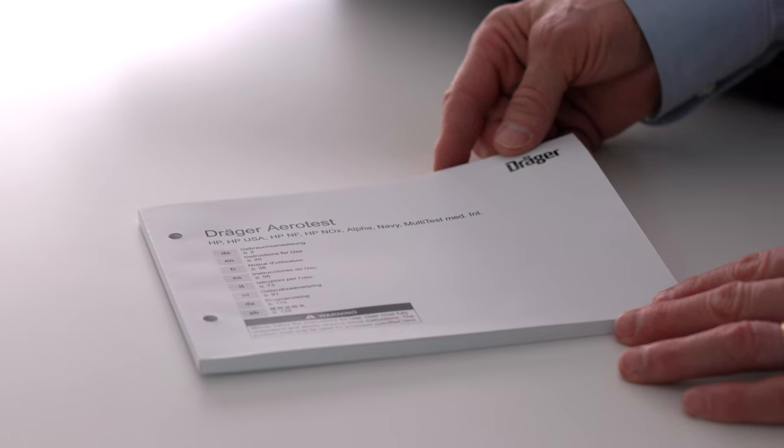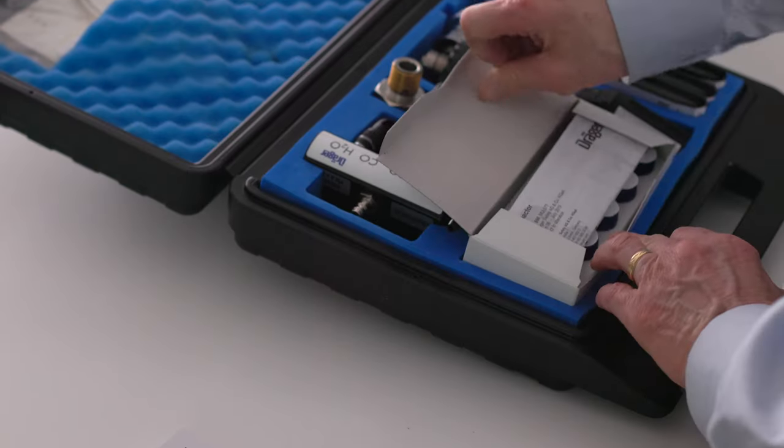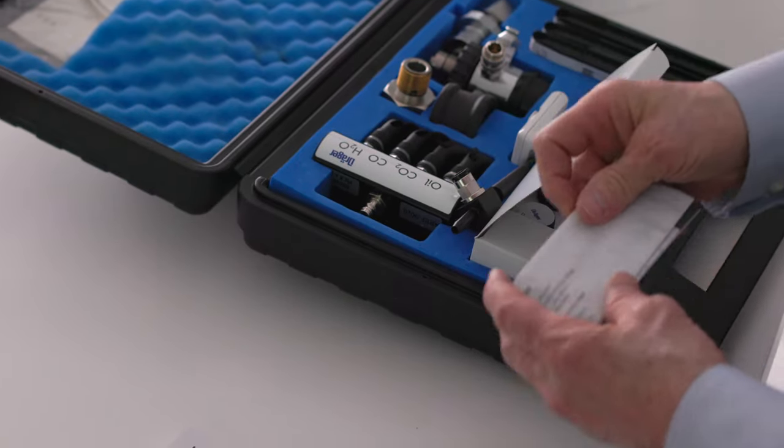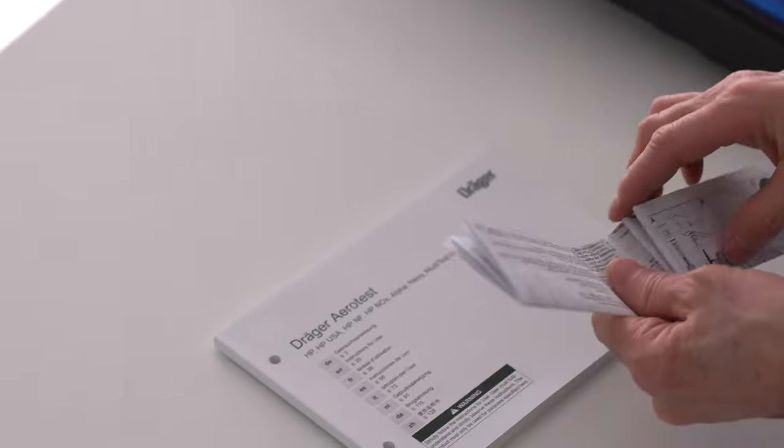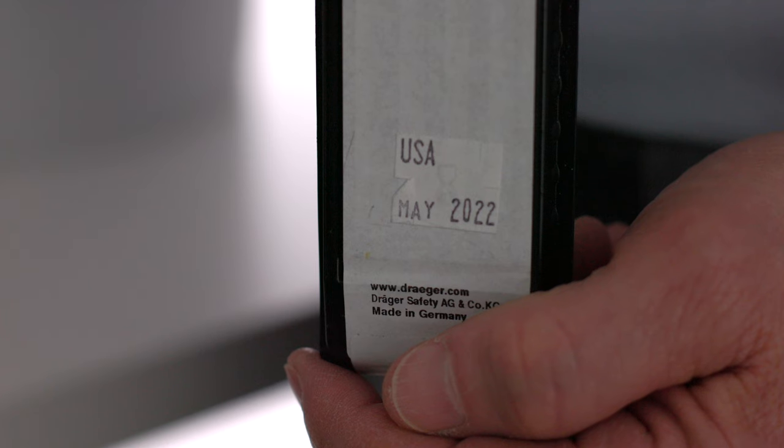Please read the instruction manual and the instructions for use for each tube and the oil impactor before using the Aerotest, and check the back of the package of tubes to ensure the tubes are within shelf life.